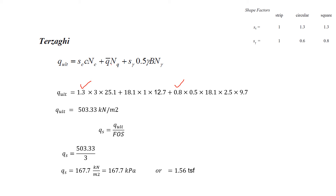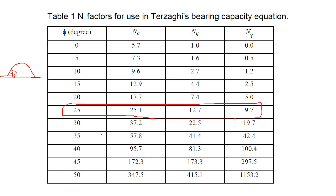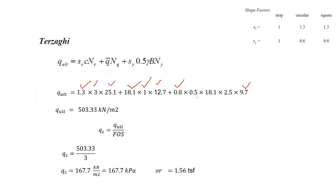q-bar equals gamma × d, where gamma = 18.1 kN/m³ and d = 1 m (depth of foundation), so q-bar = 18.1. The 0.5 is a constant that stays as is. Gamma = 18.1 kN/m³ (unit weight of soil) and b = 2.5 m for the square footing.